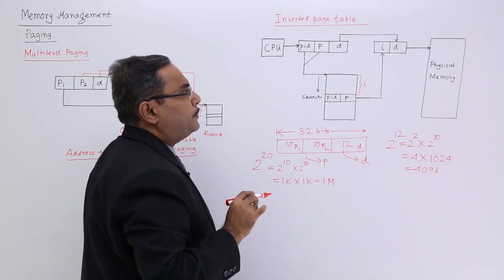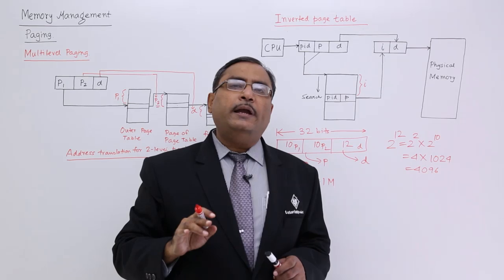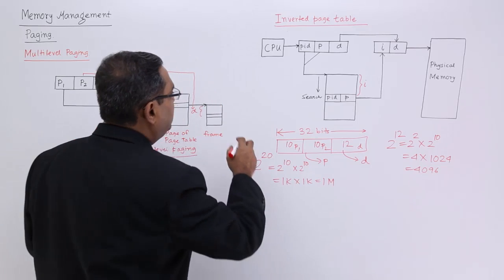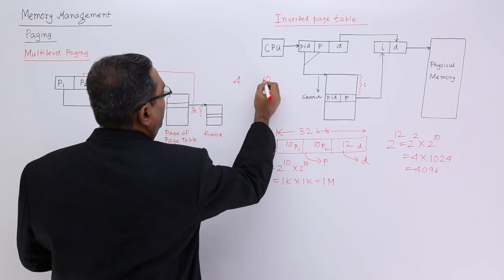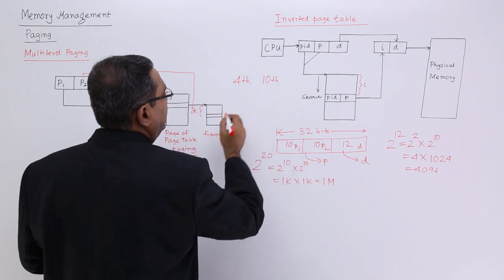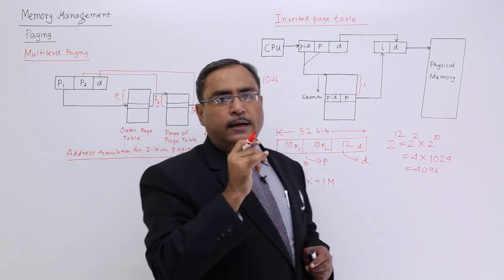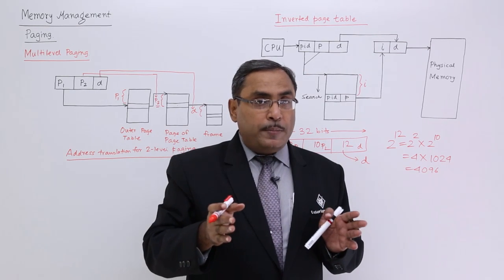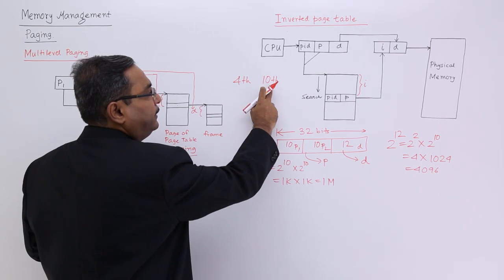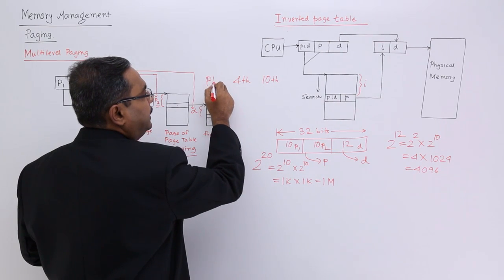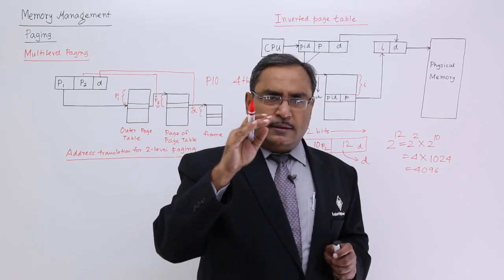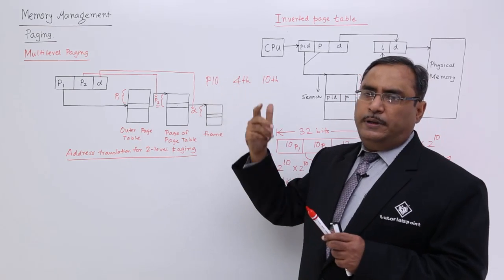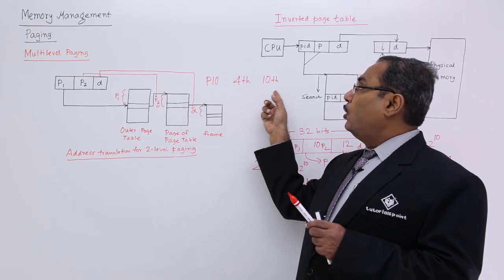In an inverted page table, let us suppose a multi-programming environment where multiple programs are working at the same time in memory. If I tell you to go to the 4th page and 10th offset, you cannot determine the actual address because I did not tell you for which process. That is why in a multi-programming environment, the page number and offset alone are not enough — you must also provide the PID, the process identification number.